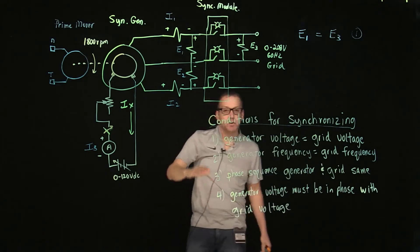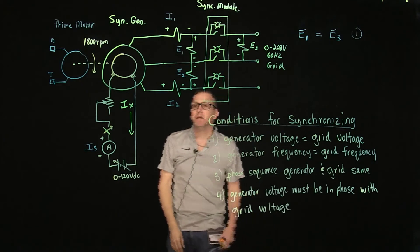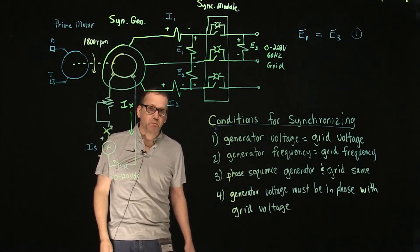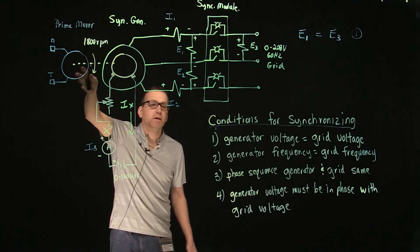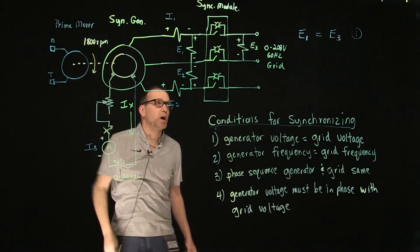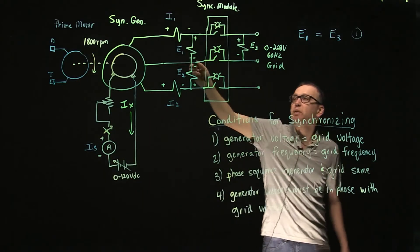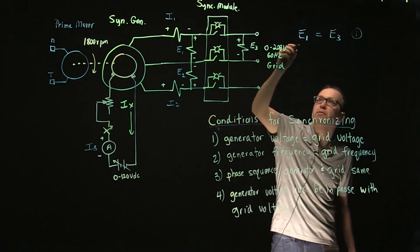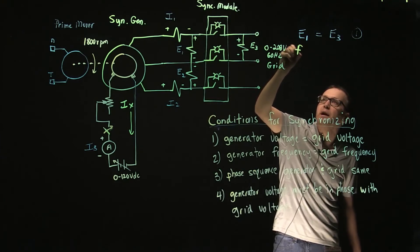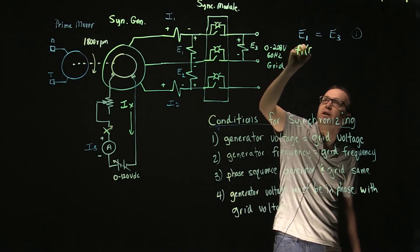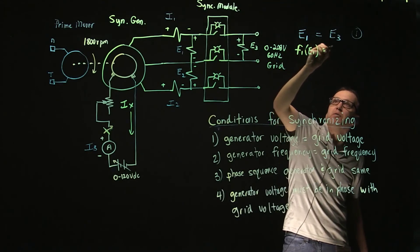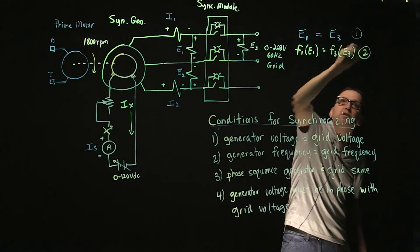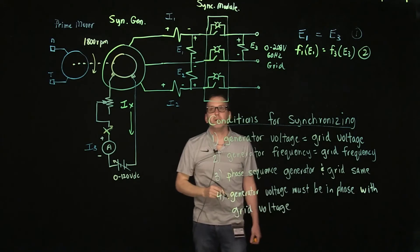For condition number two, the generator frequency must equal the grid frequency. To control the frequency of the generator output, we need to control the speed or torque on the prime mover. We are going to use meters E1 and E3, but in the LVDAM software we can also set these up as frequency meters — F1 derived from E1, and F3 derived from E3 — to determine condition number two.